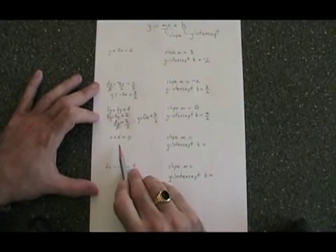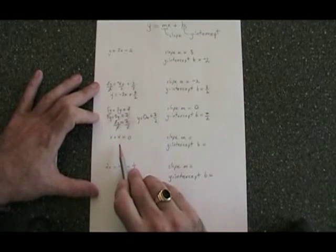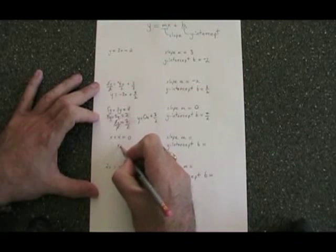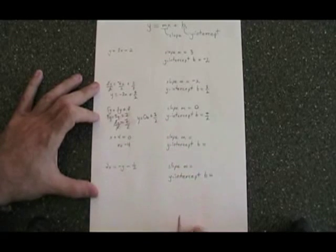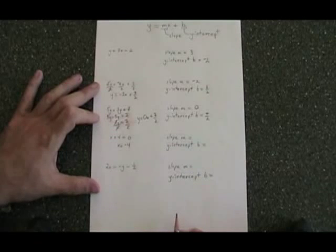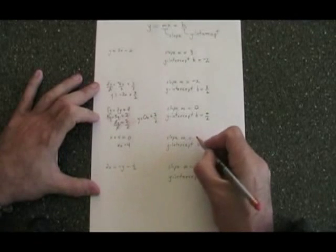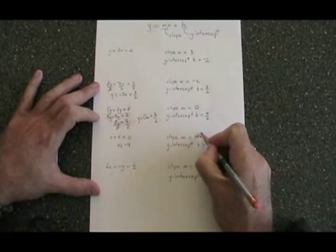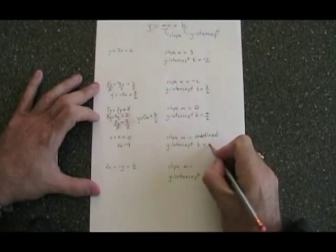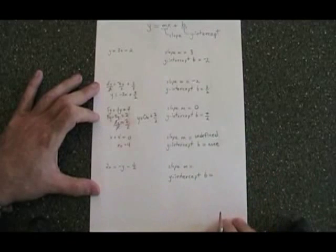In the fourth equation, it is impossible to isolate y because there is no y. The only thing I can do is move the 4 to the other side, x equals negative 4, and I have to know that any equation with x equals number has an undefined slope and has no y-intercept. It is a vertical line.